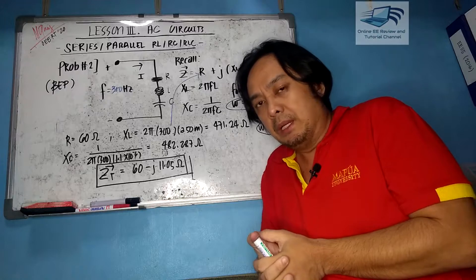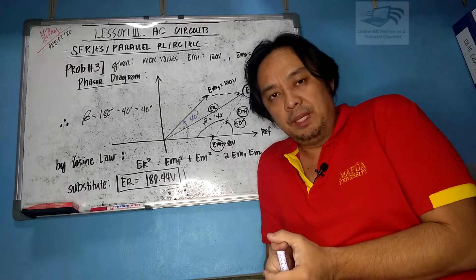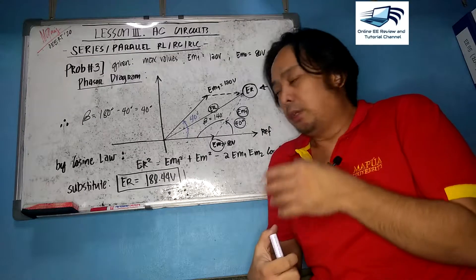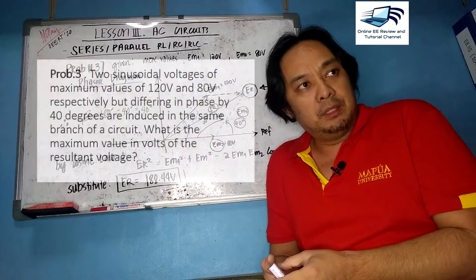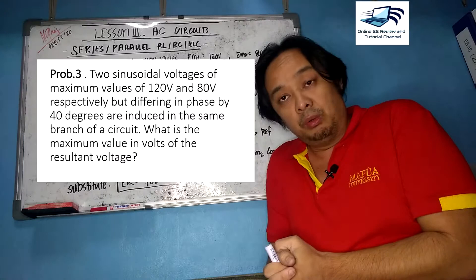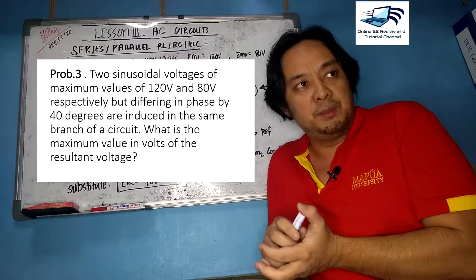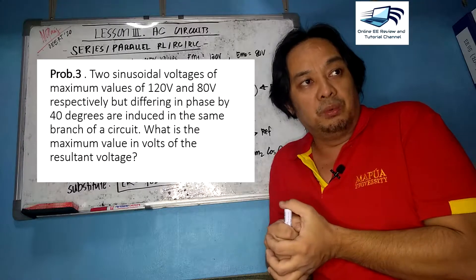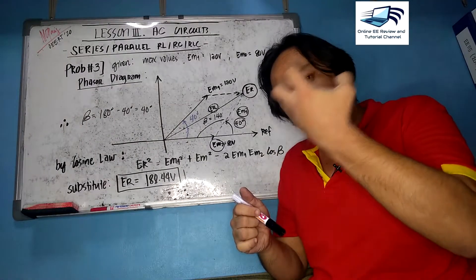That was a straightforward board problem. Now we move to an interesting Problem 3, which involves the solution using a phasor diagram. The problem: two sinusoidal voltages have maximum values of 120 volts and 80 volts respectively, but they differ by an angular displacement of 40 degrees and are induced in the same branch of a circuit. What is the maximum voltage of the resultant?